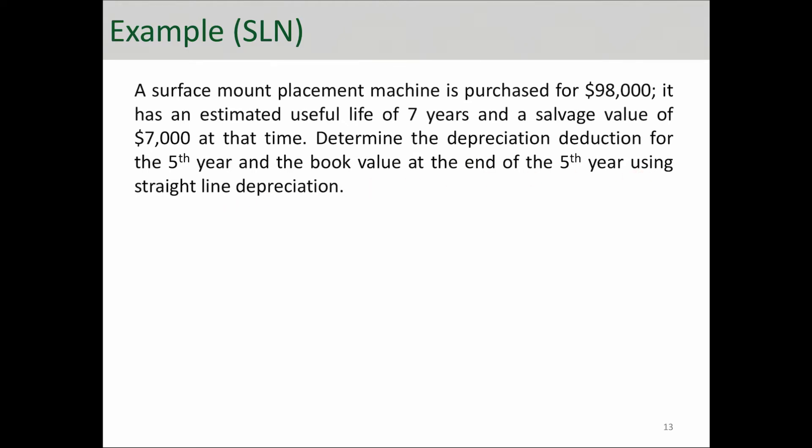So let's break everything down to what we were given here. We know that cost basis is $98,000 and the depreciable life seems to be seven years, so N is seven, and salvage value is $7,000. We're looking for depreciation deduction for year five and also book value for year five, so we're looking for D5 and book value of year five.